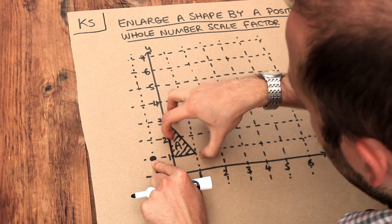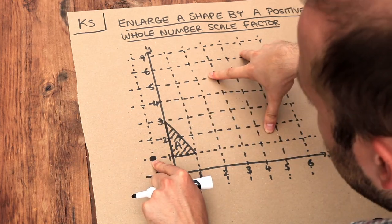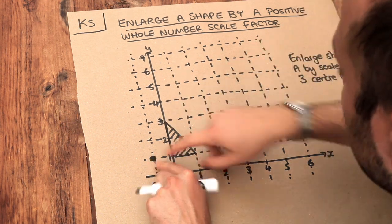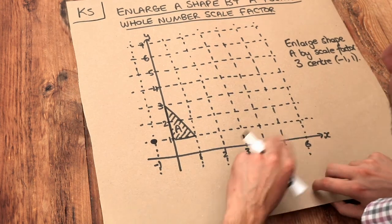So basically the shape is going to expand and get three times as big in terms of width and height, expanding about that particular point here, and the way we do it is point by point.